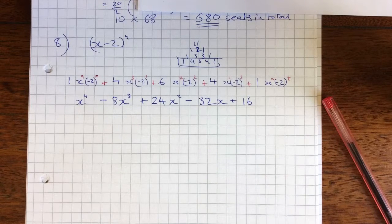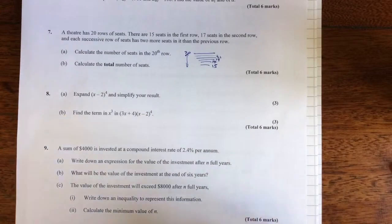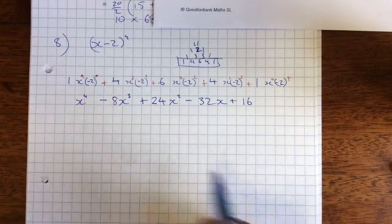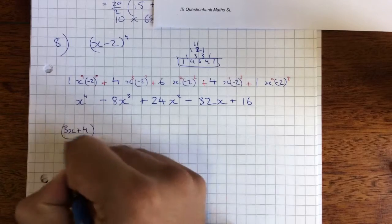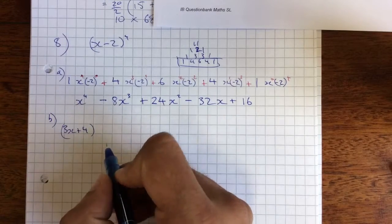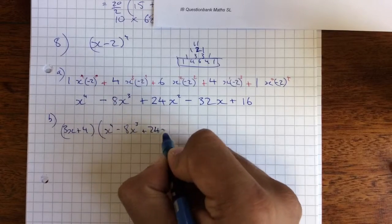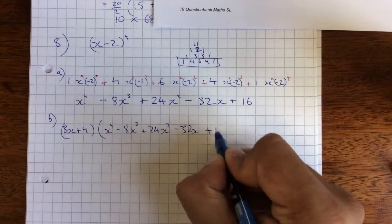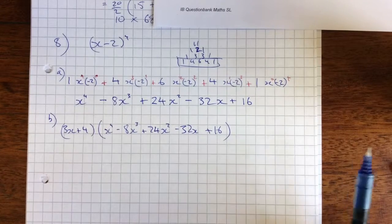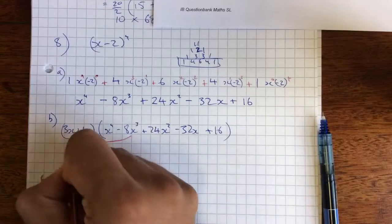So now we want to find the term in x cubed for this. And we've already worked this out. So I'm just going to write this out: 3x plus 4. This is part B, isn't it? This is part A. Let's label those up. Part B: (3x plus 4) times (x⁴ minus 8x³ plus 24x² minus 32x plus 16). So you've got 5 bits there and 2 bits there. If you multiplied the whole lot out, you'd get 10 things. And then you'd have to simplify. But it's only asked for the term in x cubed.